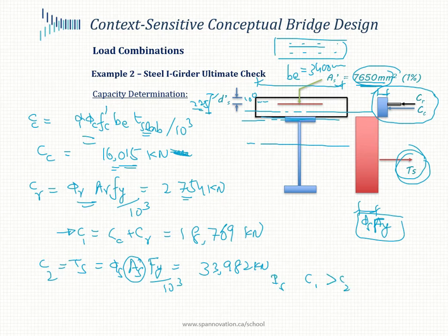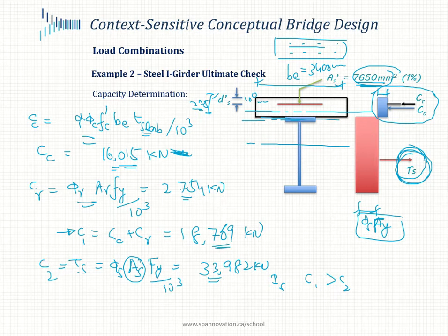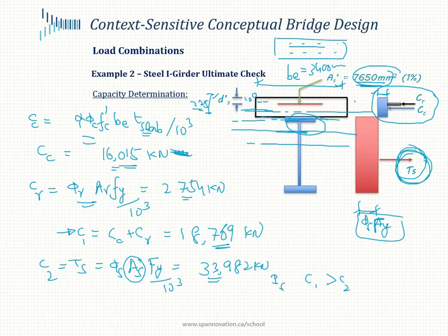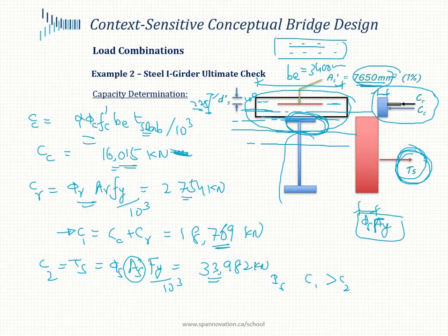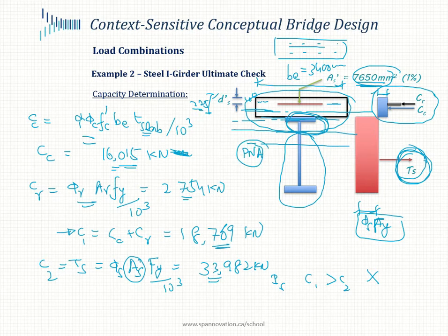If C1 were larger than C2, we could equilibrate the entire steel tension with some portion in the deck. But clearly that's not the case — the steel section produces a force much larger than the maximum compression the deck can generate. So the plastic neutral axis cannot be in the deck; some portion of the steel girder will have to be in compression, and the PNA is somewhere in the girder cross section.